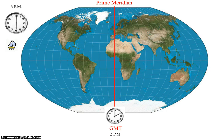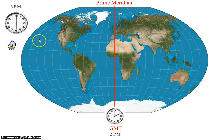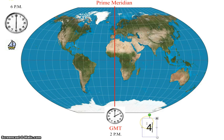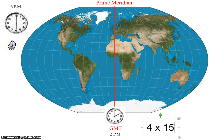Here's how it works. Let's say on the ship it's 6pm, and the clock showing Greenwich Mean Time reads 2pm. The first thing we need to do is figure out the time difference between Greenwich and the ship: from 2pm to 6pm is a four-hour difference, meaning the ship is four time zones away from Greenwich. Since each time zone is 15 degrees apart, four times 15 degrees tells us the ship is 60 degrees away from Greenwich.